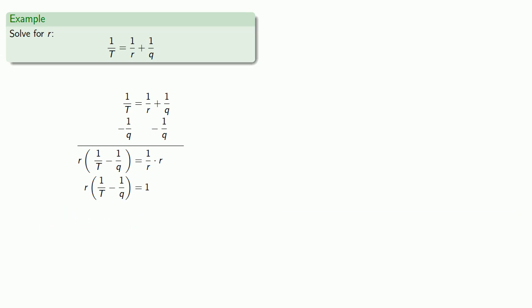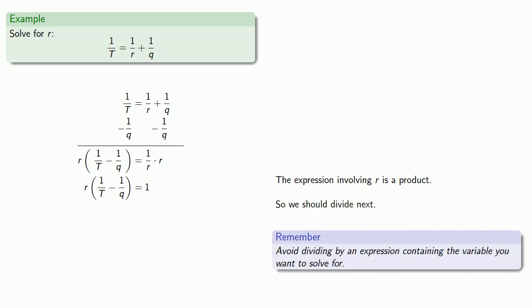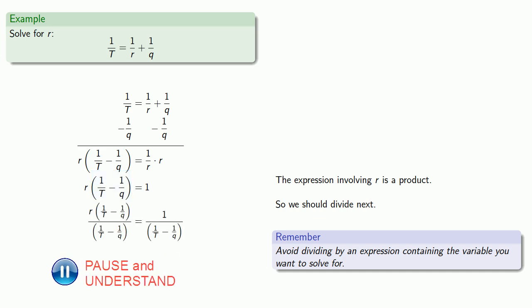The expression involving R is now a product, so we should divide. Typically we want to avoid dividing by an expression containing the variable we want to solve for. So we divide by the entire expression: 1 over T minus 1 over Q. And that gives us our final answer.